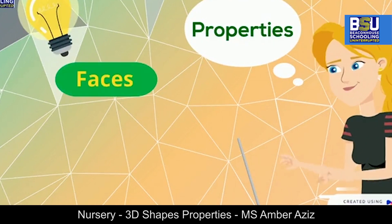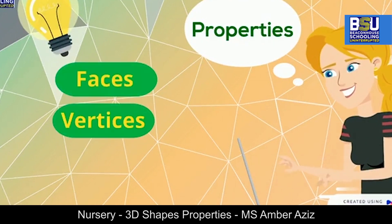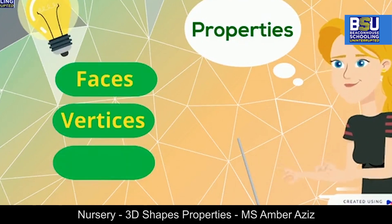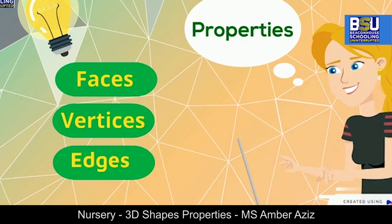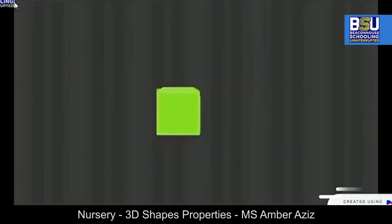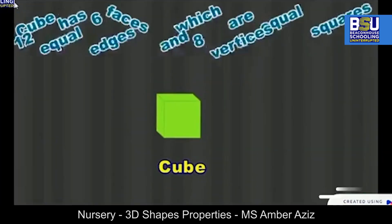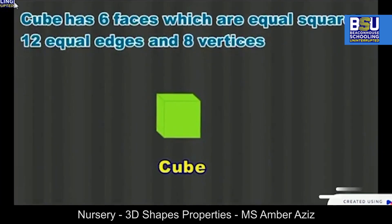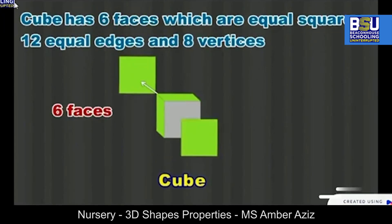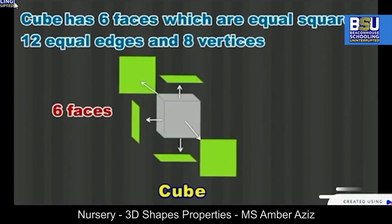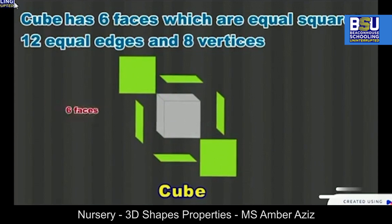Now I will tell you about the properties of 3D shapes. They have faces, vertices, and edges. Let's have a look at them. Let's count the faces, edges, and vertices of a cube first. These are the faces of a cube — it has six faces.